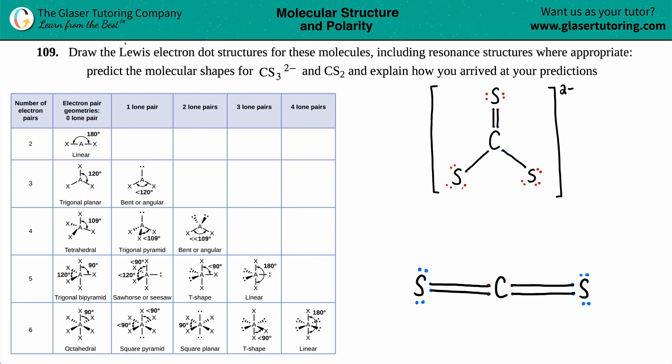Number 109. Draw the Lewis electron dot structures for these molecules, including resonance structures where appropriate. And then for this one, we just have to predict the molecular shapes of CS₃²⁻ and CS₂ and explain how you arrived at your predictions. So we're not going to predict here. We're actually going to make sure that we get it right, what the molecular shape is for CS₃²⁻ and CS₂.